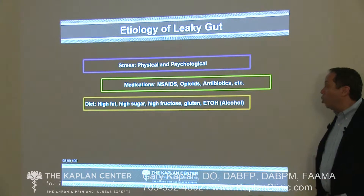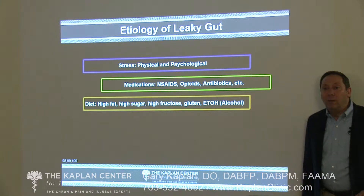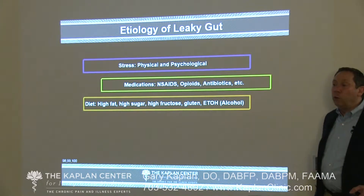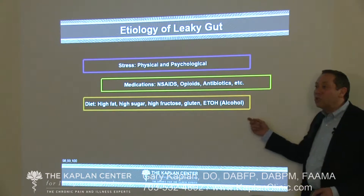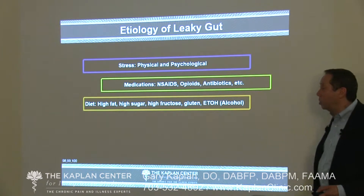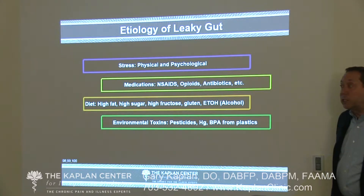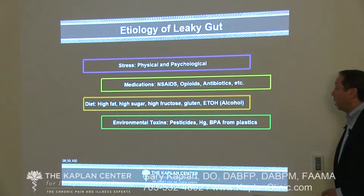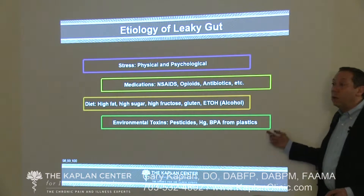Diets high in fat, high in sugar, high in fructose, high in gluten, high in alcohol — sometimes referred to as the standard American diet — will all create problems and dysbiosis. Environmental toxins such as pesticides, mercury, and BPAs from plastics represent many of the ways we've figured out how to poison ourselves.